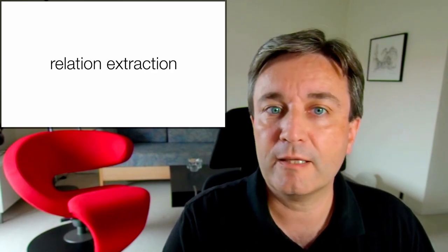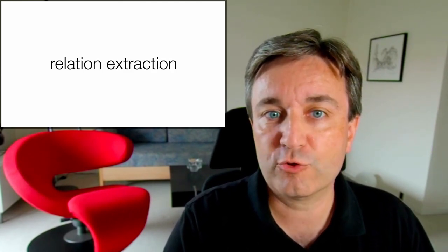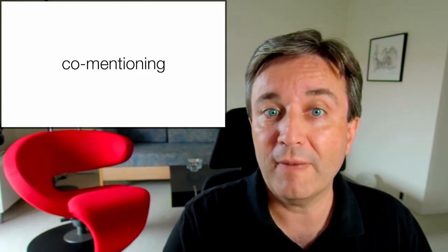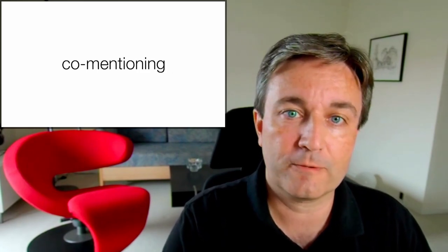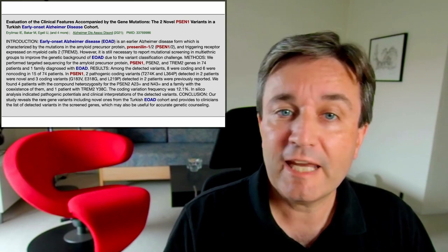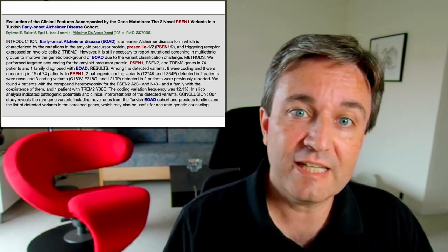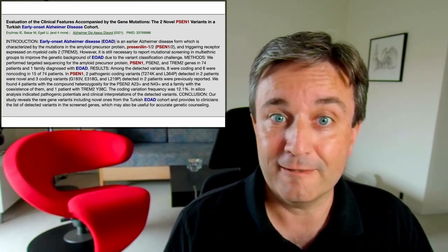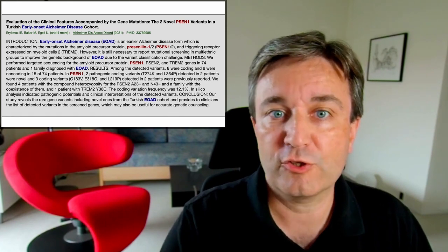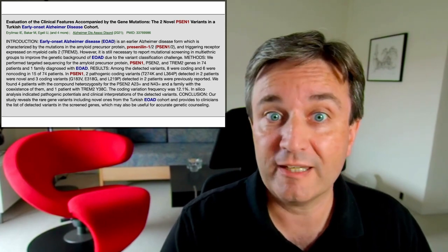And once we've identified them in text, we can do relation extraction by looking for co-mentioning of these names in text. That is, we find papers like this where a disease is mentioned together with a gene. And we count up how many such publications we find for a given gene disease pair.